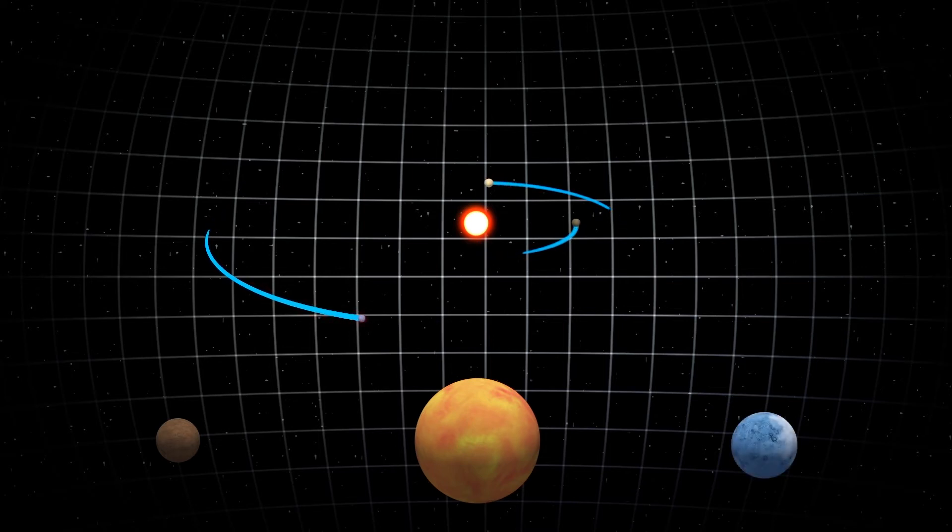TOI-700d is the only one in the habitable zone, measures 20% larger than Earth, and orbits every 37 days.